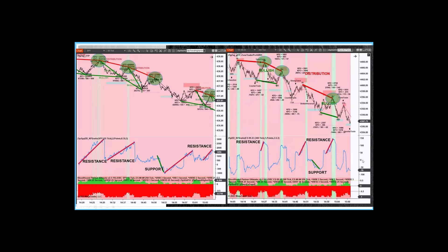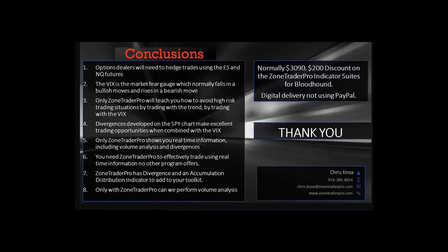So that's basically how I use divergences when the divergence is against the trend. I am offering a $200 discount when we do this through digital delivery, not using PayPal — I want you to keep some of your money instead of paying PayPal fees.